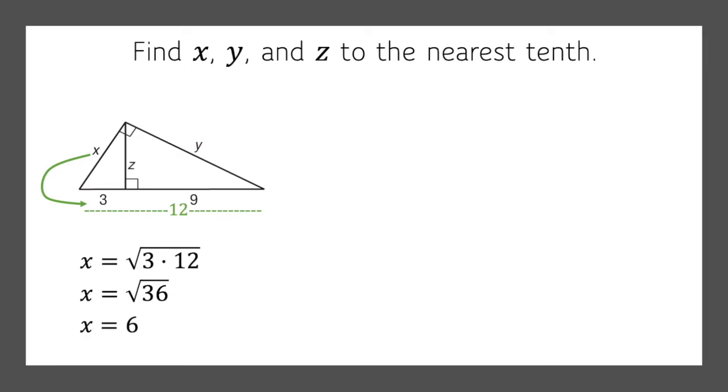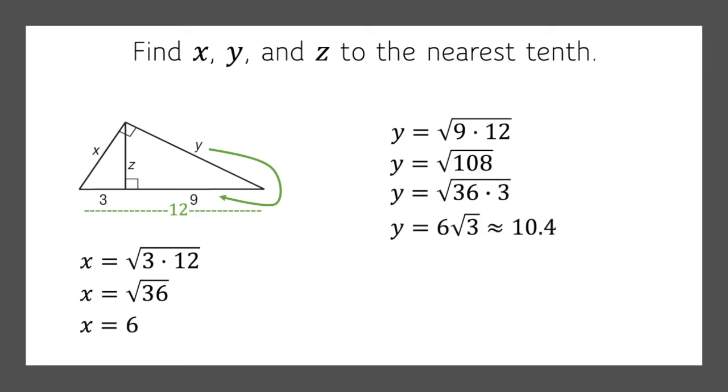Now let's find Y. So from Y, I'm going to turn the corner, I run into 9. So Y equals the square root of 9 times the hypotenuse, or 9 times 12, square root of 108. That breaks up into 36 times 3, which is 6 times the square root of 3, which is approximately 10.4.